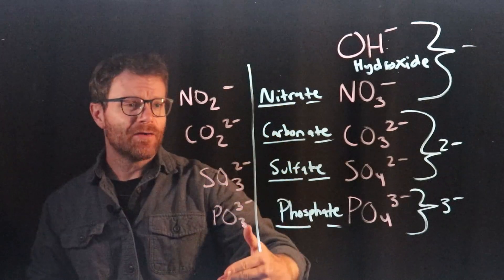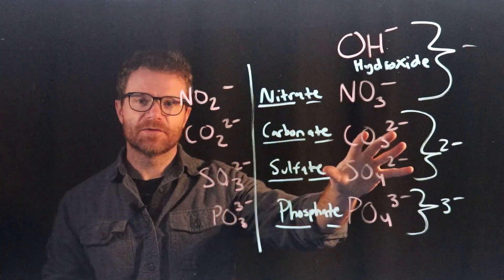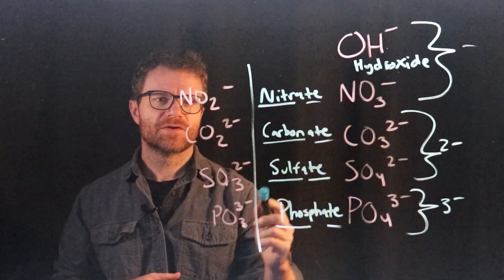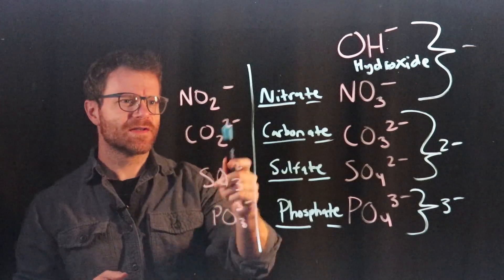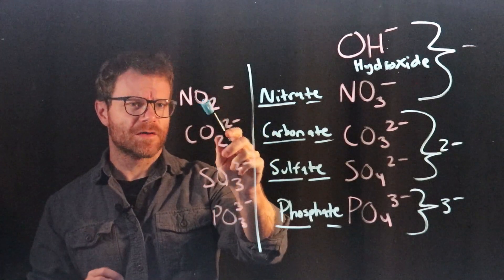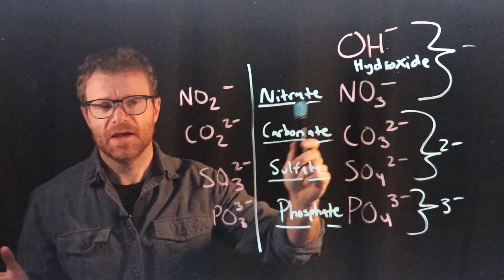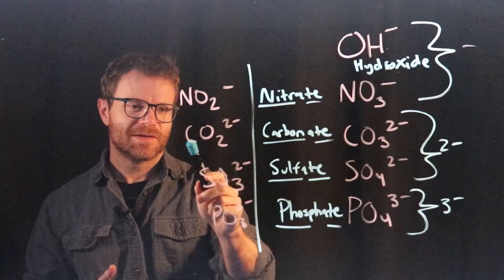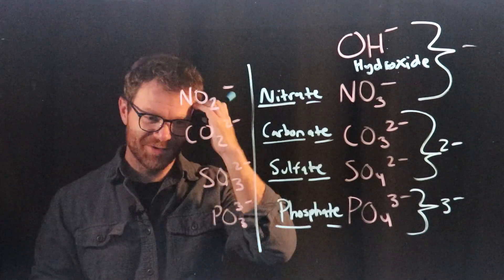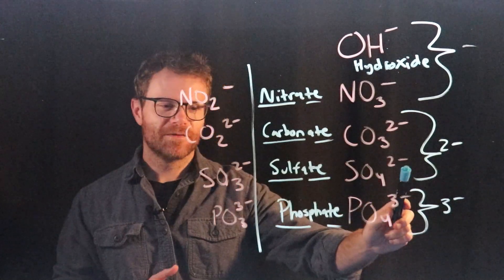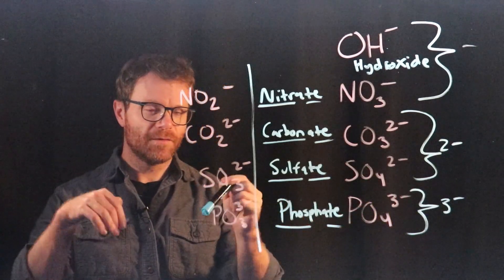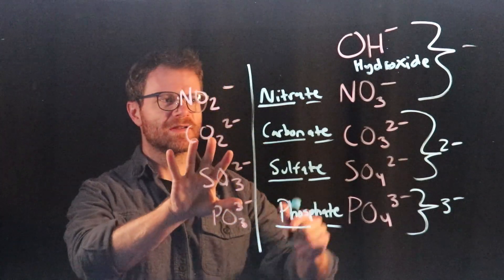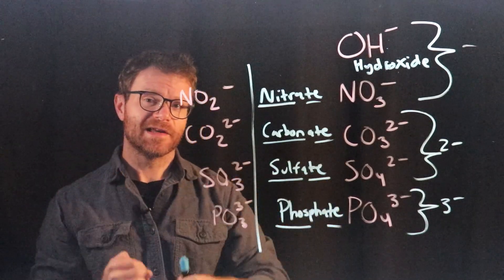As you can see, I've written out another group of polyatomic ions next to our first group. And you'll notice some similarities. So we've got nitrate here, NO3, with a negative charge. Here we have NO2 with a negative charge. So the same thing, but with one fewer oxygens. The charge, notice, is the same. We've got carbonate here with a negative two charge. Here we have something, CO2, not carbon dioxide, with a negative two charge. Here we have sulfate with a negative two charge. Here we have SO3, so one fewer oxygen. Same thing, still negative two charge. So everything in this column here is the same as everything in this column, but with one less oxygen.